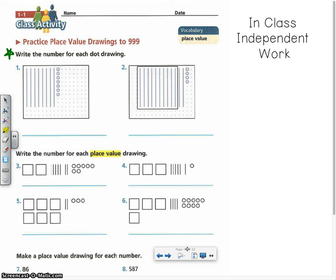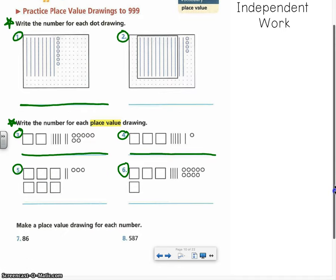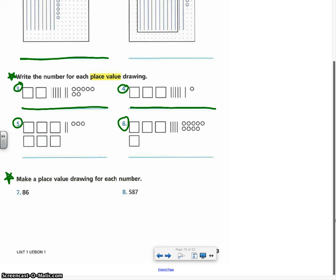First, write the number for each dot drawing. So for numbers one and two, you're going to look at the dot drawings and you are going to write the number in standard form on the blue lines underneath. Your next set of directions are to write the number for each place value drawing. Numbers three and four have place value drawings that aren't on the dot paper. You need to write the numbers that are represented using standard form on the blue lines under those. And then your last set of directions are to make a place value drawing for each number. So you have the number 86 and you have the number 587. You need to represent those numbers using a place value drawing.